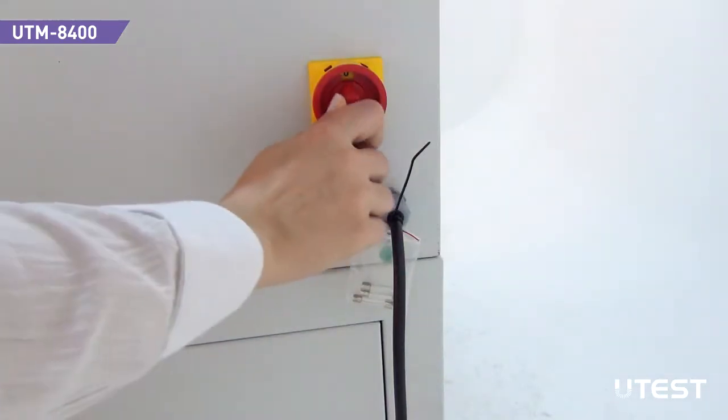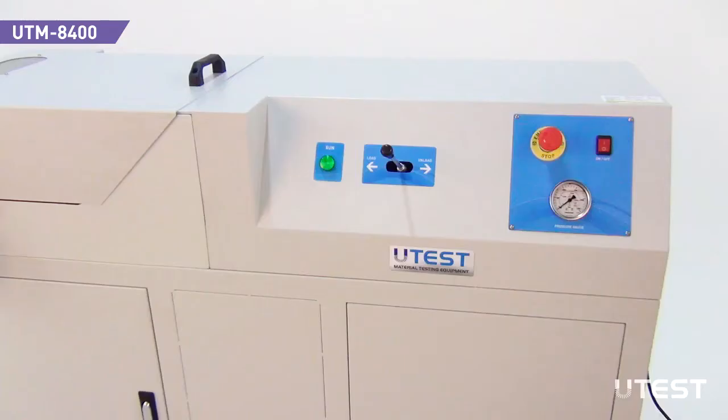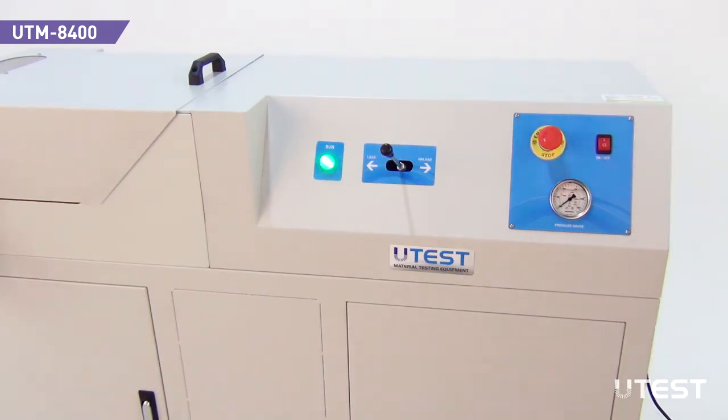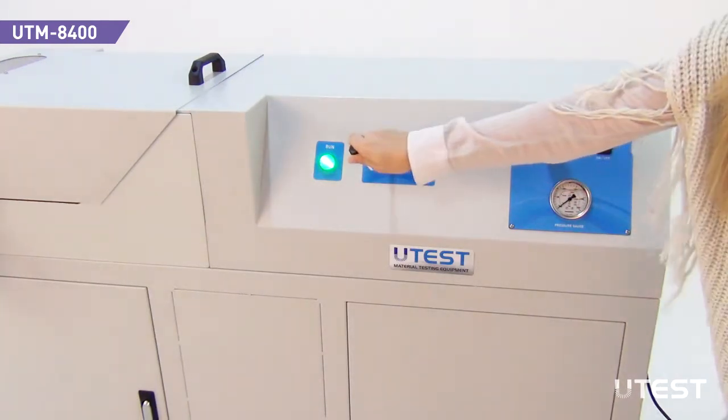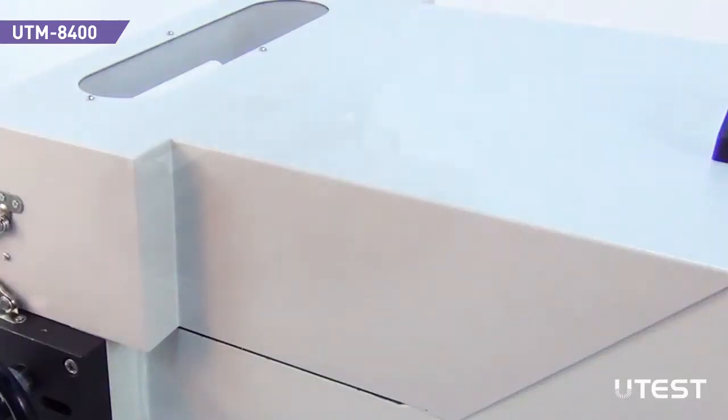Open the device by using the main power switch. Turn on the device by using the on off button. Start the test using the direction control valve by shifting it to load position.